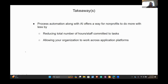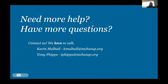The main takeaways: process automation, in conjunction with AI, offers a way for nonprofits to do more with less — reducing the total hours of staff committed to tasks and allowing your organization to work across application platforms. If you have tech sprawl because of IT costs, this is a way to inexpensively get those systems to communicate with one another. If you have any questions, I answer technology questions across our entire global community — you can reach out to me at the email address shown, or my colleague Tony at the address also posted here.